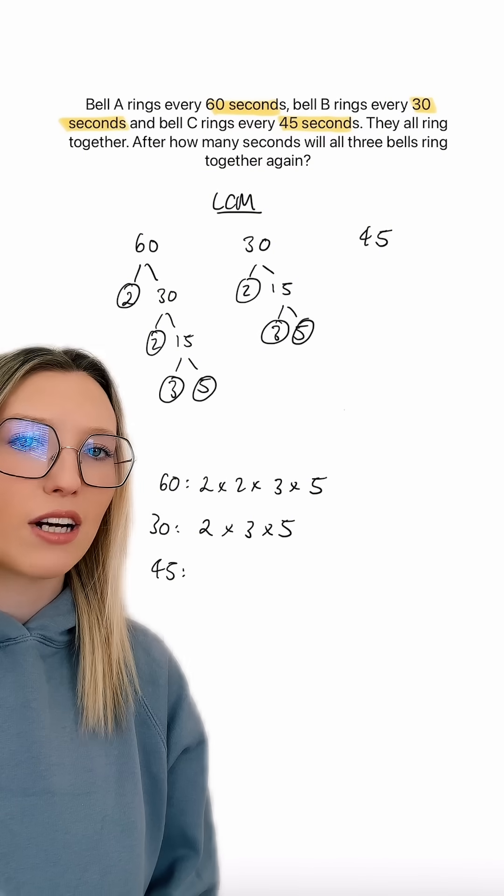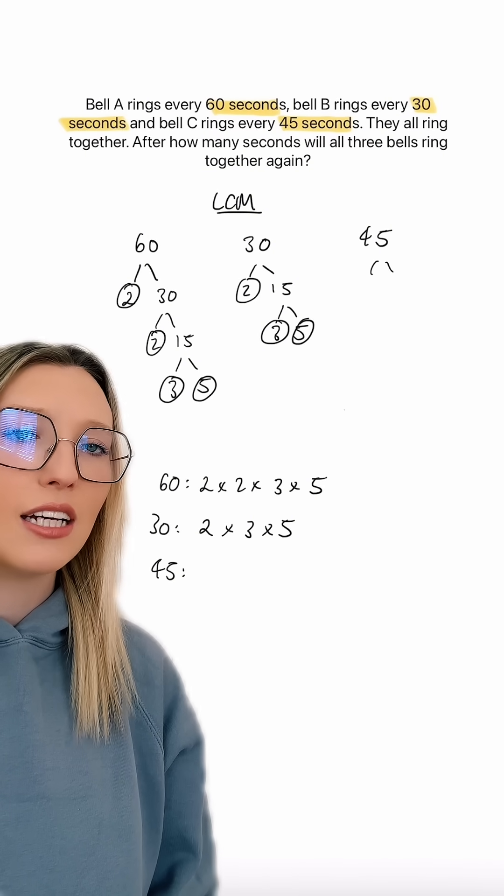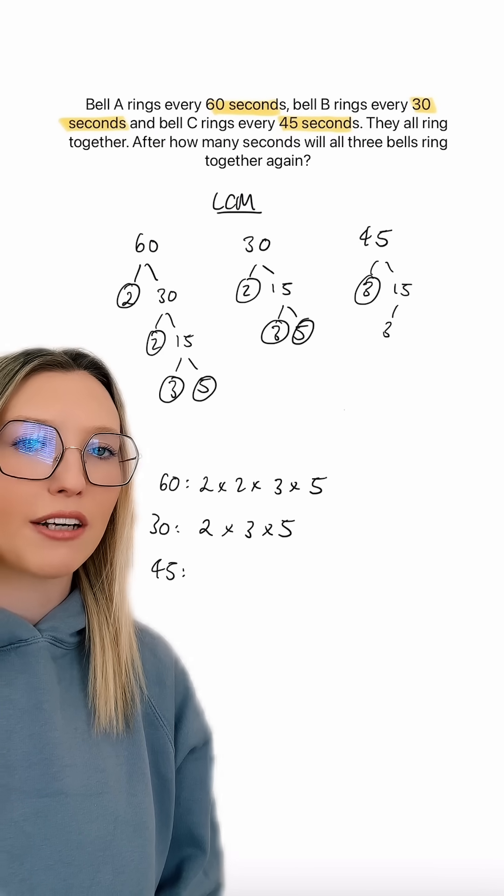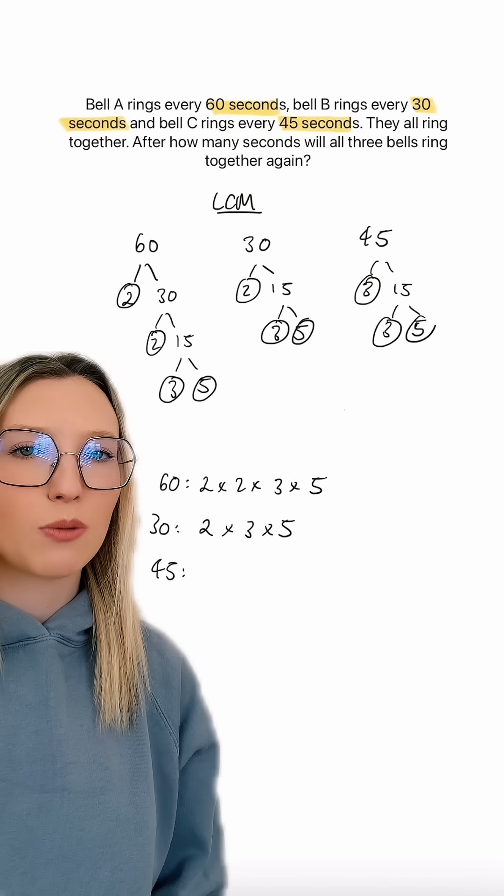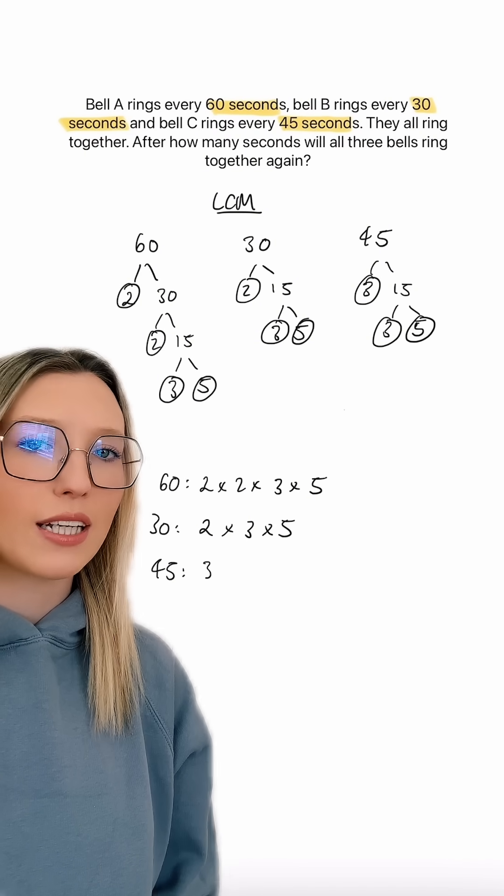And finally for 45, we can go ahead and write this as 3 times by 15, and then we can separate our 15 into 3 times by 5. So 45 as a product of its prime factors is 3 times by 3 times by 5.